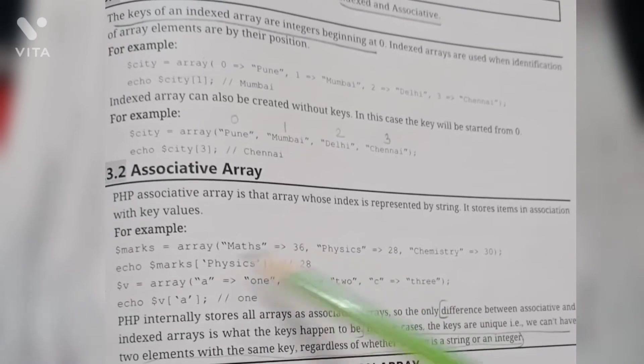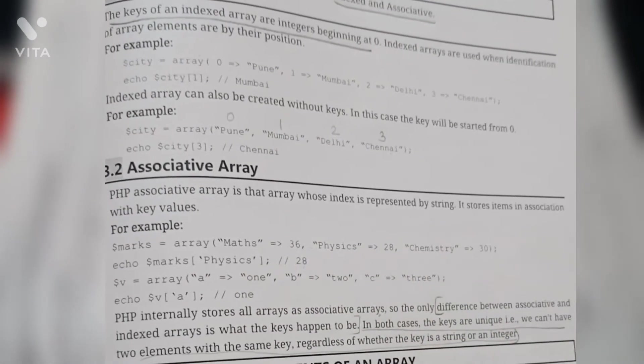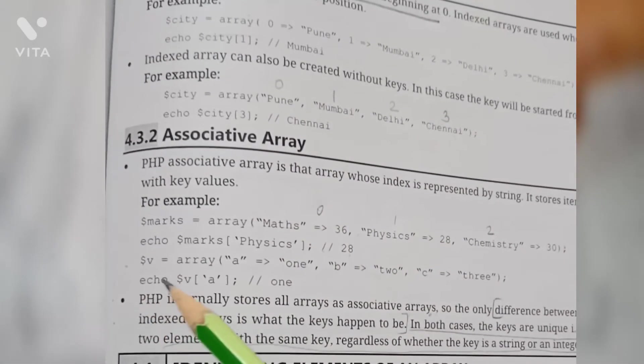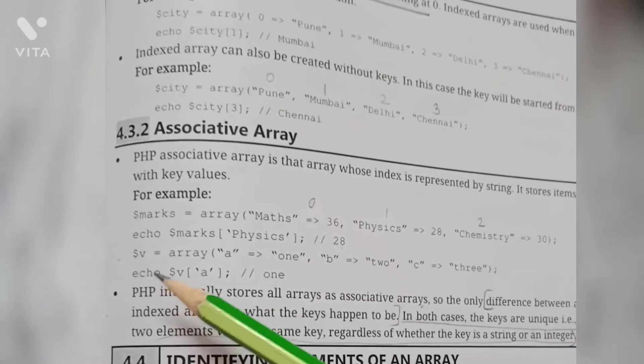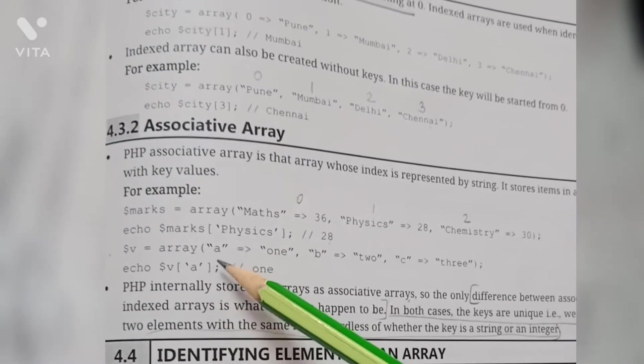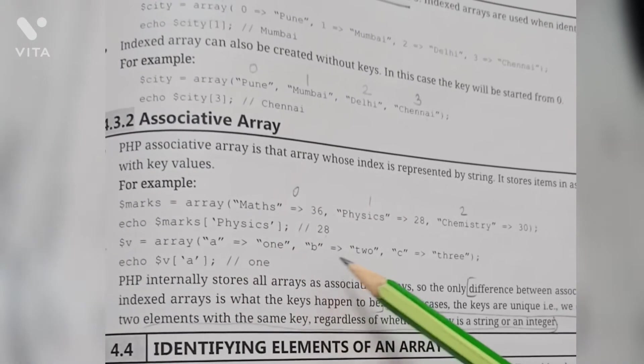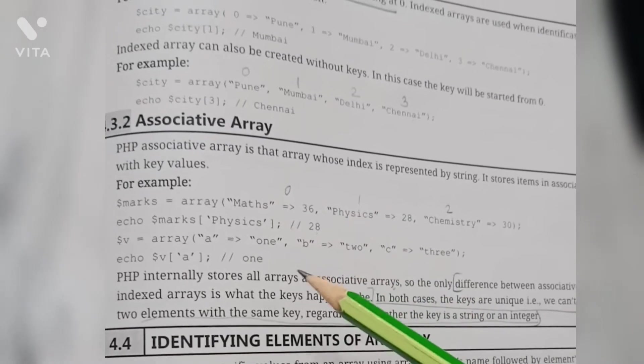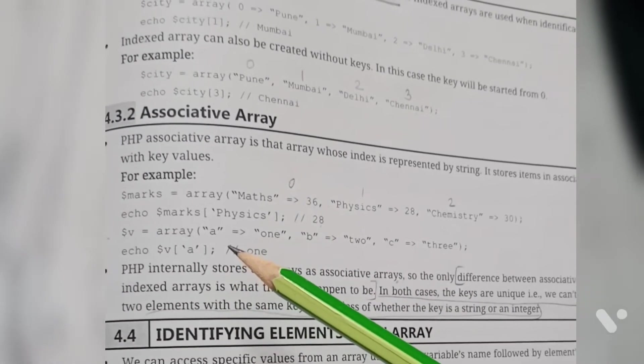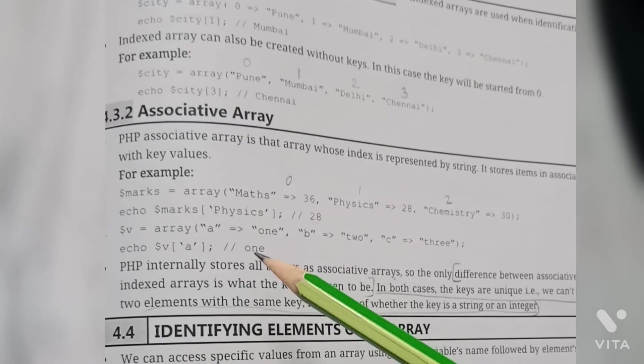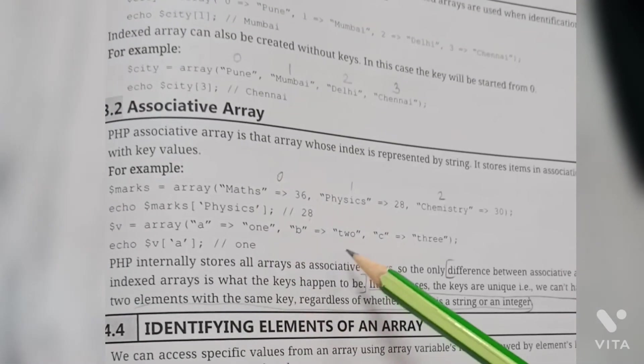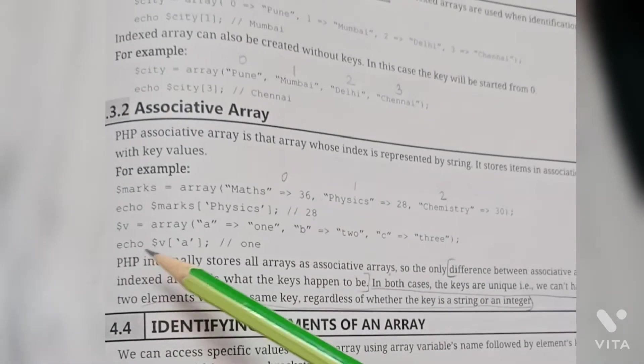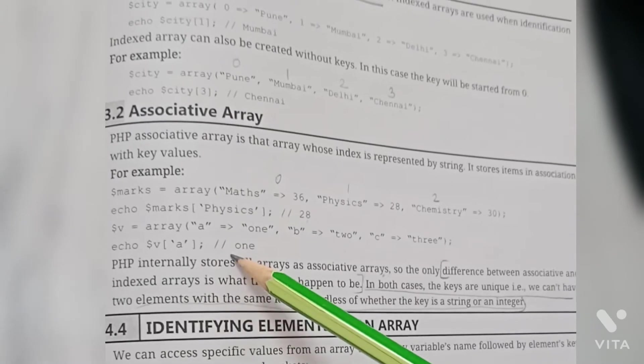Look at another example of associative array. Dollar v equals to array: a arrow 1, b arrow 2, c arrow 3. Here a, b, c - these are key or index in this example. Towards the right side of the arrow, 1, 2, 3 - these are values. Echo statement dollar v in brackets a will give output 1.